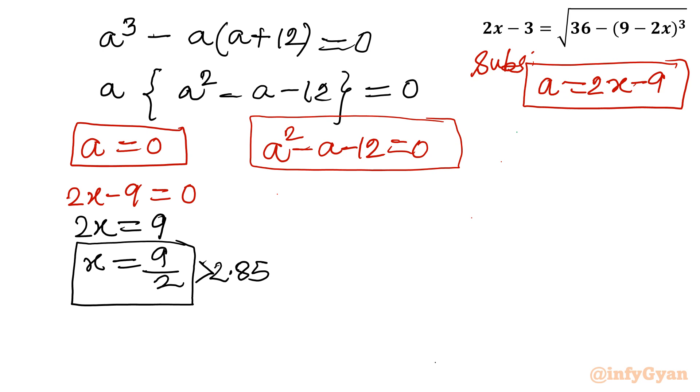Now come to this quadratic equation. I will apply quadratic formula. Minus b, so minus of minus 1 is 1, plus minus square root of b square minus 1 square minus 4ac, so 4 times 12 is 48, divided by 2a. This gives 1 plus minus square root of 49 divided by 2.